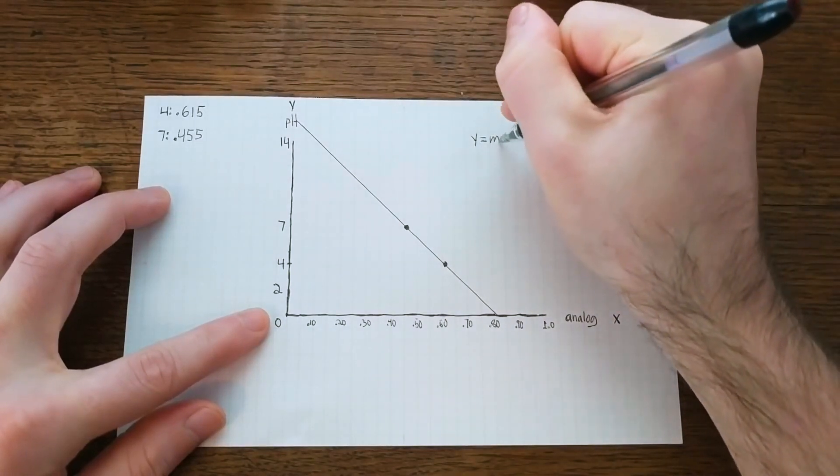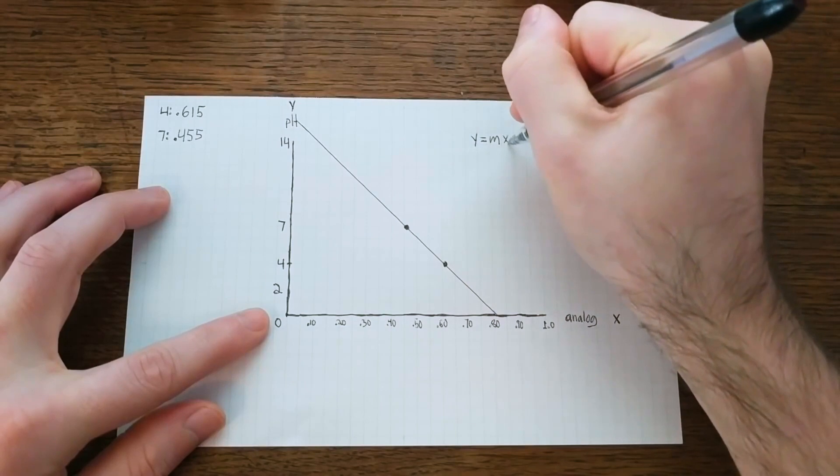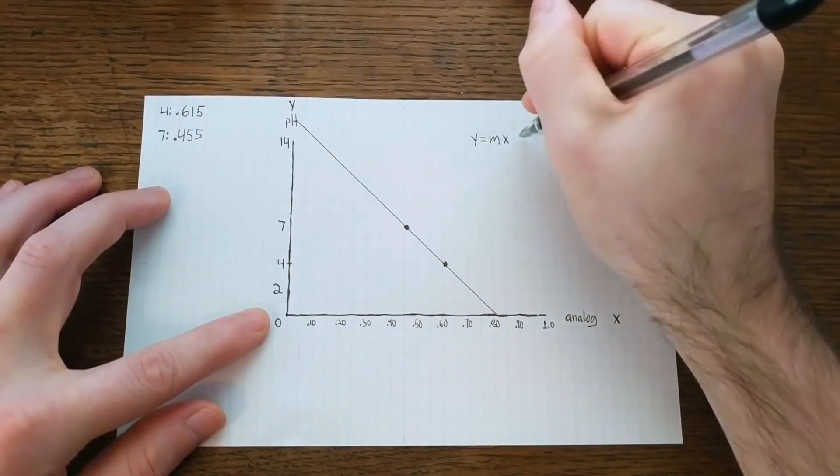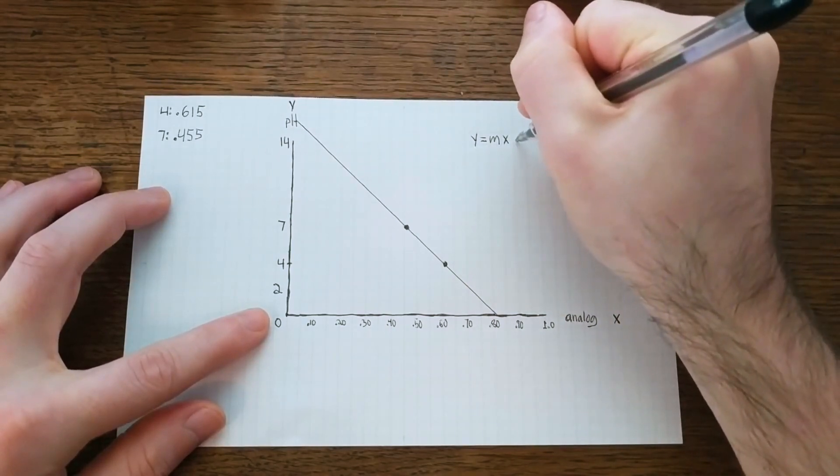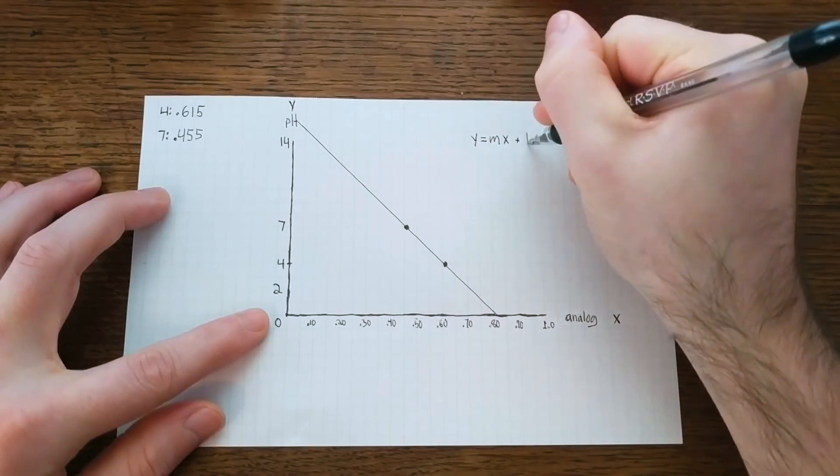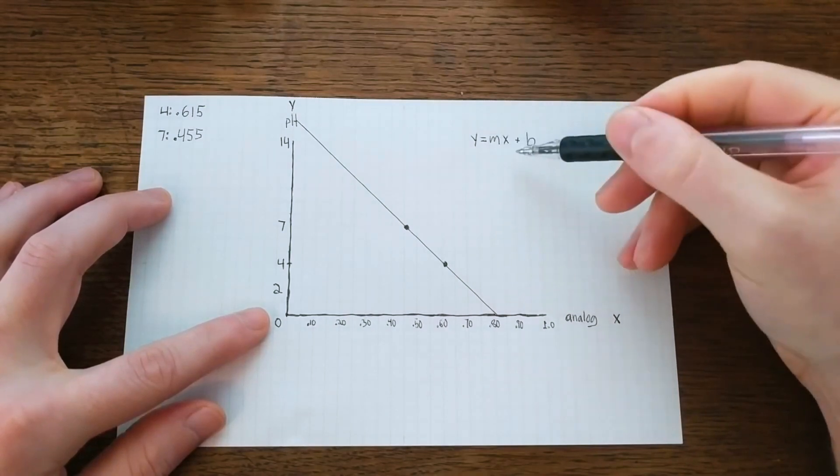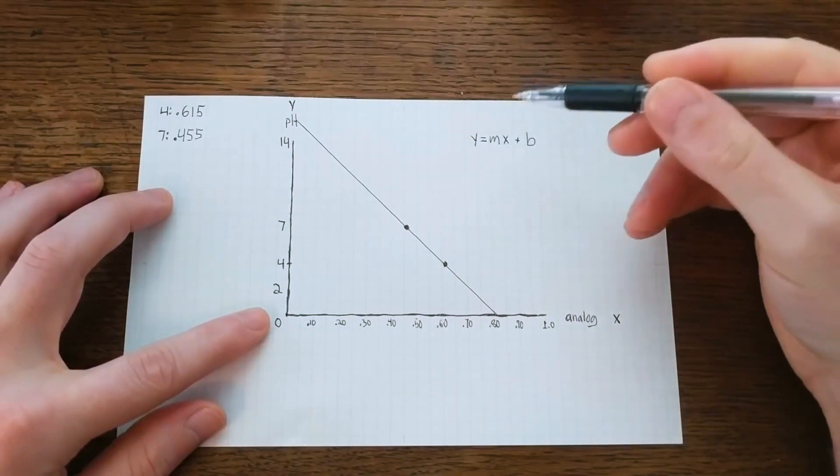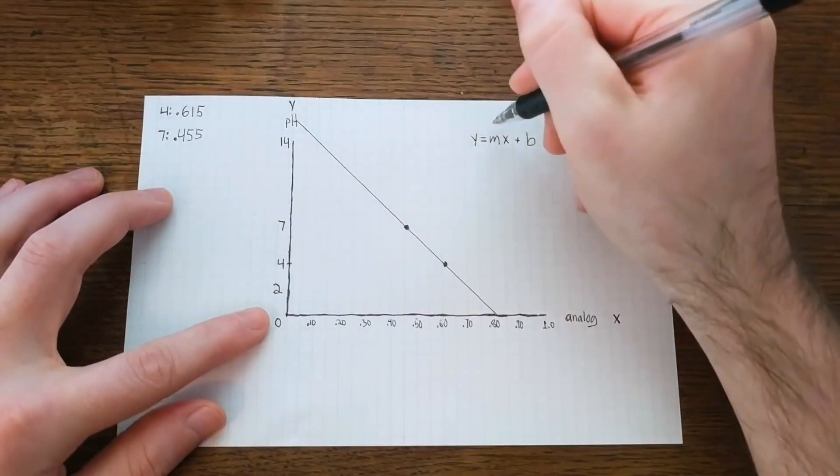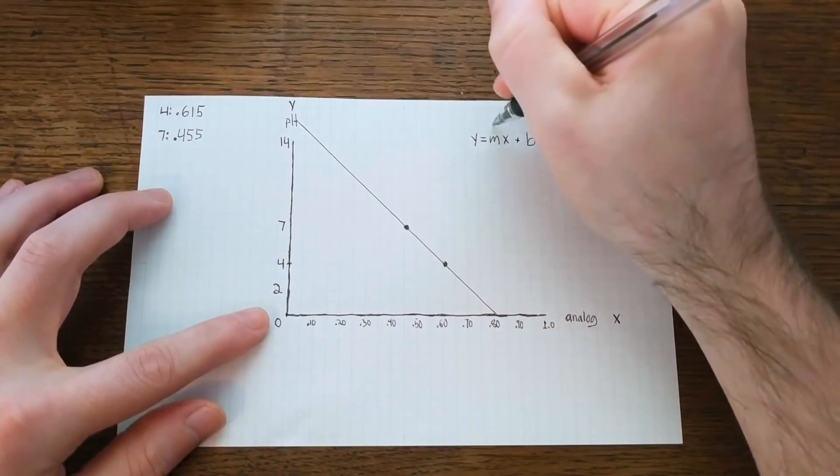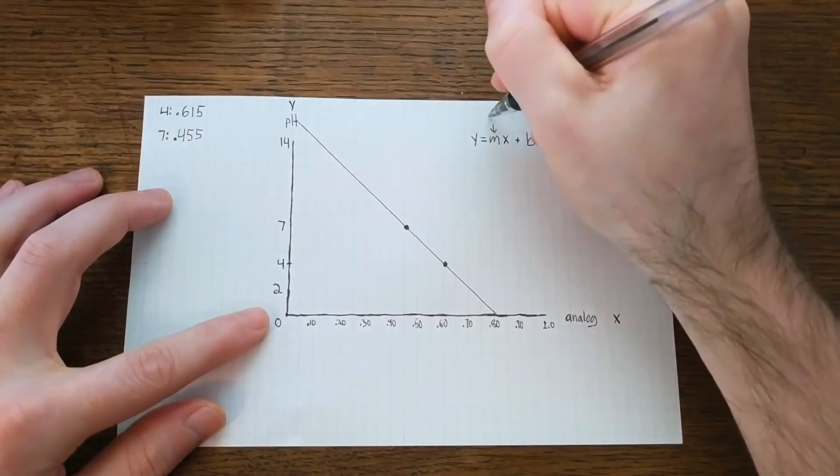Luckily, since this fits the basic definition of a linear function, we have some basic algebra on our side. You might remember this thing called the slope-intercept form, and it looks a lot like this. And from this formula, we can compute the value of y, which is our pH, from a given x, which is our analog reading, as long as we know these parameters m and b.